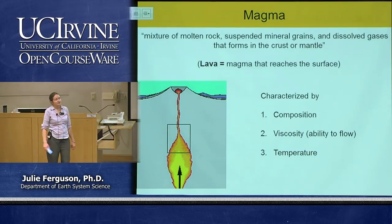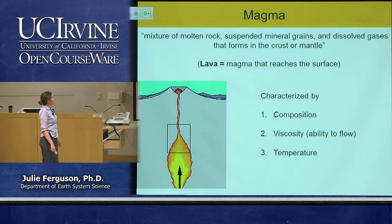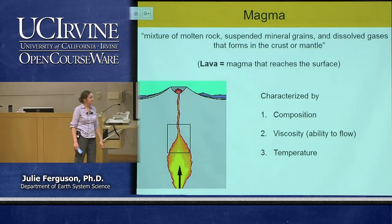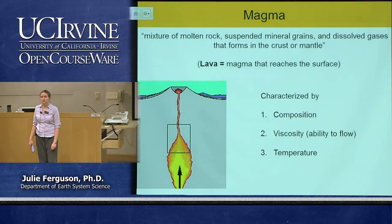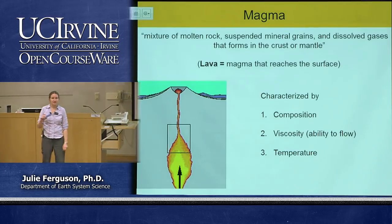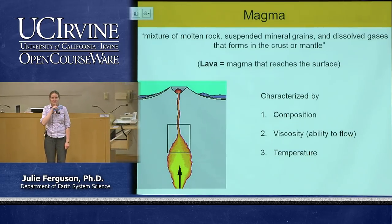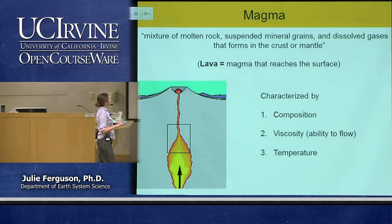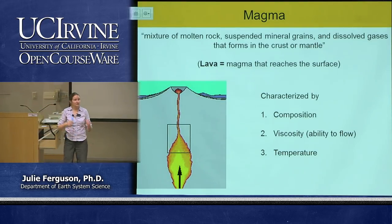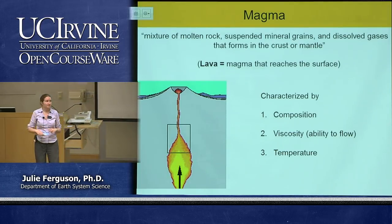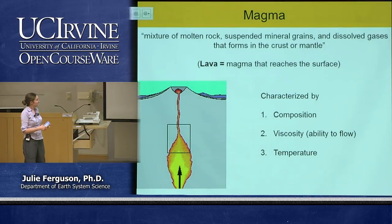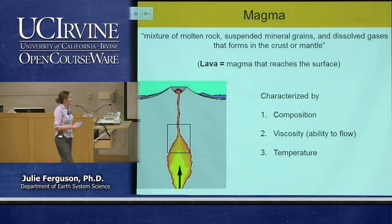Magma is a mixture of molten rock, suspended mineral grains — so it can have bits of solid in it — and dissolved gases, that forms in the crust or the mantle. Lava is basically just magma that reaches the surface. We characterize magma based on its composition, its viscosity — the ability to flow — and its temperature.